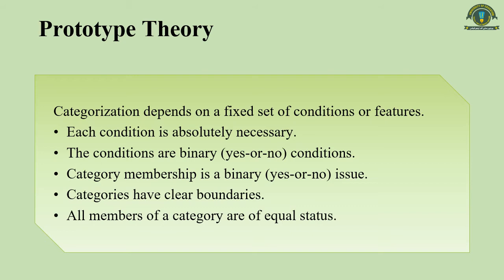As a consequence, categories have clear boundaries — a direct consequence of the fact that the defining conditions are binary. Everything either fulfills the set of conditions or it does not. If it does, it belongs to that particular category; otherwise it does not. Within their boundaries, all members enjoy the same status of being full members of that category.